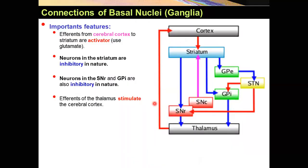Before looking at the connections of the basal ganglia and how they activate or inhibit certain components of the basal nuclei, thalamus, subthalamic nucleus, and the cerebral cortex, we need to understand some important features. The red lines indicate activation. The blue line indicates inhibition. The efferents from cerebral cortex to striatum are excitatory and they use glutamate as a neurotransmitter — so the cortex activates the striatum.